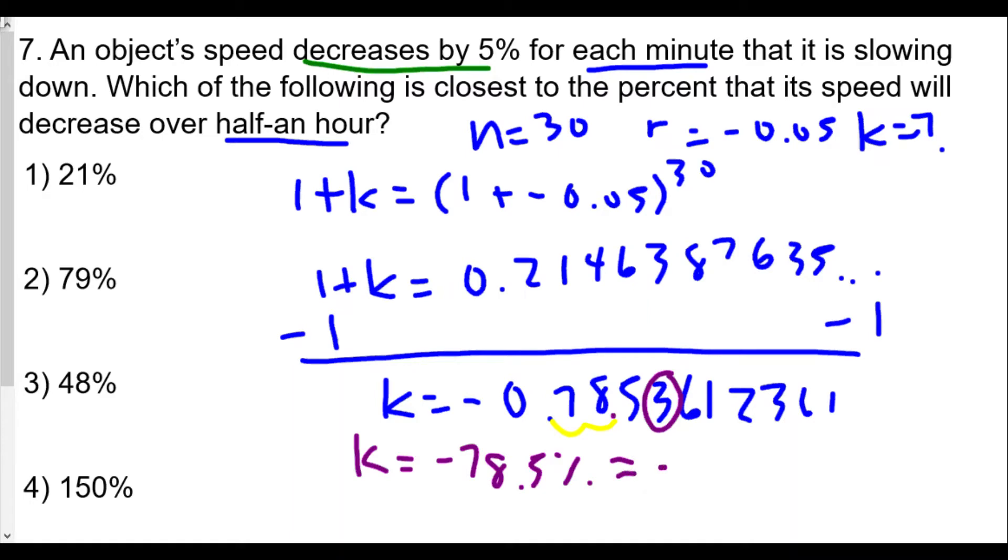We'll round up to negative 79 percent, so that will be choice 2. The question asks which is closest to the percent its speed will decrease - the negative indicates the decrease, so we'll decrease by 79 percent from the very beginning.